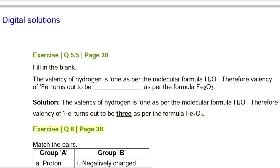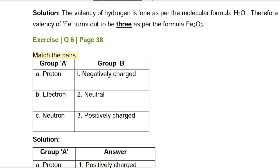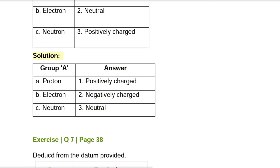Exercise Q6, page 38. Match the pairs. Group A: (A) Proton, (B) Electron, (C) Neutron. Group B: (I) Negatively charged, (II) Neutral, (III) Positively charged. Solution: (A) Proton → (III) Positively charged. (B) Electron → (I) Negatively charged. (C) Neutron → (II) Neutral.